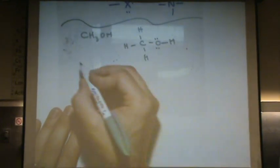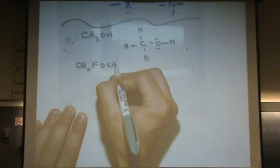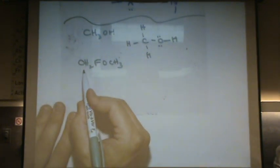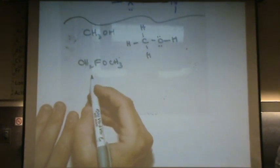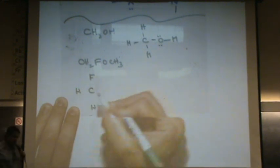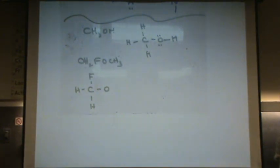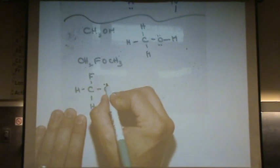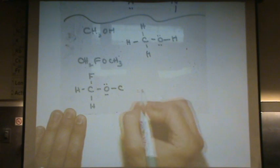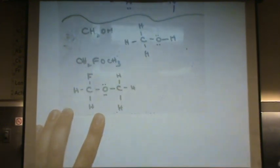Let's try another one — CH2FOCH3. The first carbon has to have four bonds. H, H, and F are three of those four, and the next one over is O, making four bonds for that carbon. Oxygen has to have two bonds and two lone pairs: one bond to the carbon on the left, one to the carbon on the right. That last carbon on the right also has to have four bonds. And there we go.